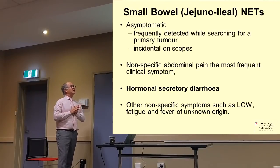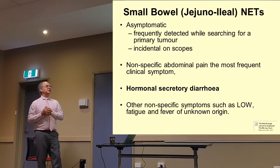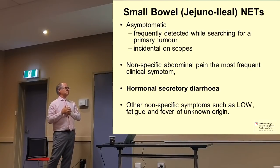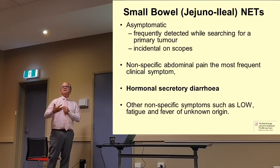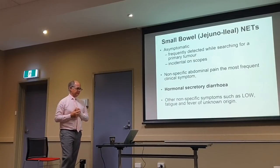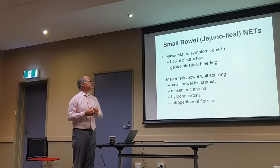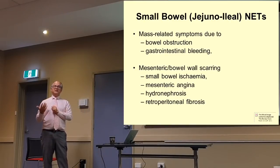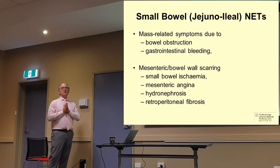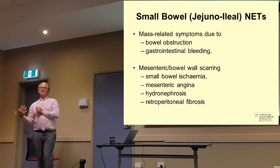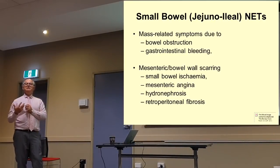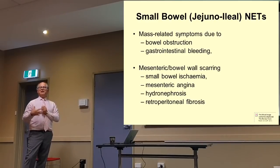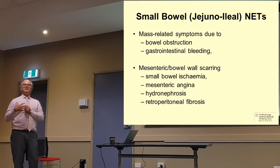The commonest ones we see are the small bowel NETs. Often they're found incidentally, by accident. Patients might have just non-specific abdominal pain, or they can produce carcinoid syndrome causing diarrhoea. They can also have vague symptoms like loss of weight or appetite. They can cause bowel obstruction and gastrointestinal bleeding. They can also cause scarring of the small bowel, causing the bowel to be starved of its blood supply.